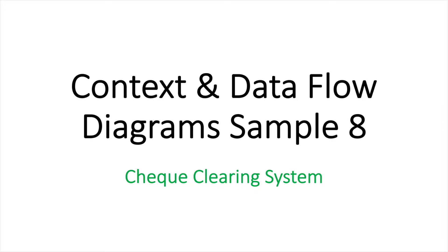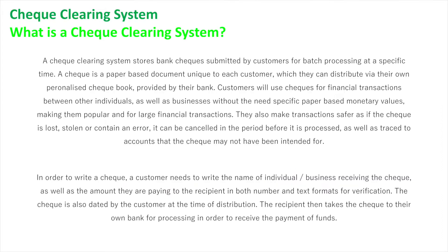Context and Dataflow Diagram Sample 8: Check Clearing System. Essentially, what is a check clearing system? A check clearing system stores bank checks submitted by customers for batch processing at a specific time. A check is a paper-based document unique to each customer, which they can distribute via their own personalized checkbook provided by their bank. Customers use checks for financial transactions between individuals and businesses without the need for specific paper-based monetary values, making them popular for large financial transactions.